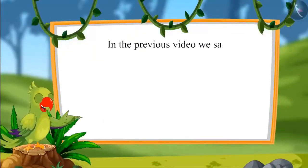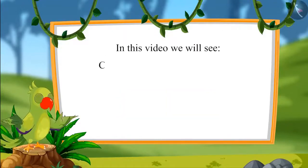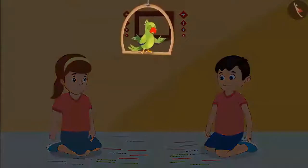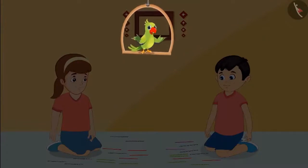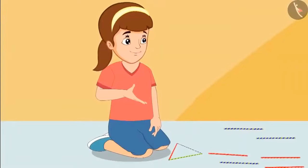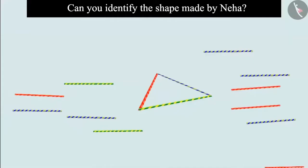Hello kids. In the previous video, we saw examples of identifying two-dimensional shapes. In this video, we will see some common mistakes in identifying two-dimensional shapes that should be avoided. Today, Chotu and Neha are playing a game together — they have some straws and have to make shapes by joining them. Neha said, 'Chotu, I have made a shape out of three straws — can you identify it?' Children, do you know which shape Neha has made?